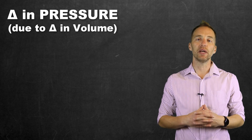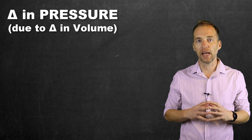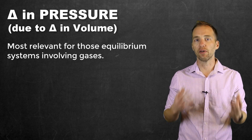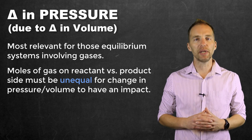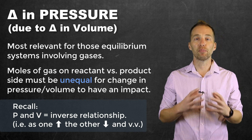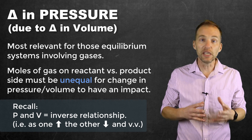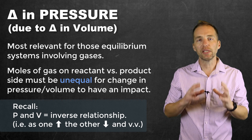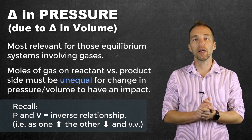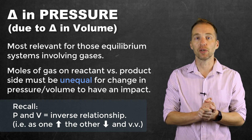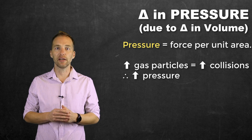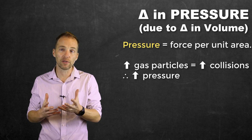The final stress deals with changes in pressure, which only comes into play when dealing with gas-phase equilibrium systems where the moles of gas on the reactant and product sides are unequal, and when there is an accompanying change in volume. We must remember the inverse relationship between volume and pressure: increasing volume decreases pressure, and decreasing volume increases pressure. Pressure is force per unit area — gas exerts pressure by colliding against container walls, so more gas particles means more pressure, and fewer means less.